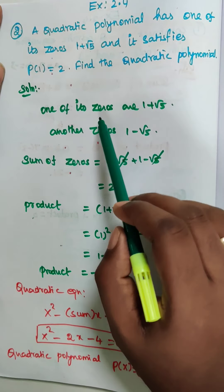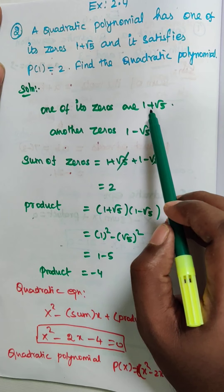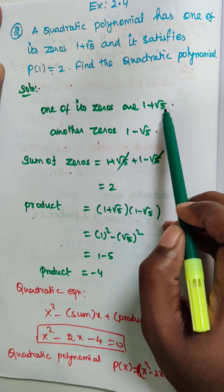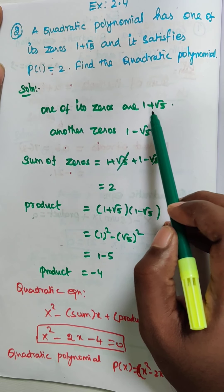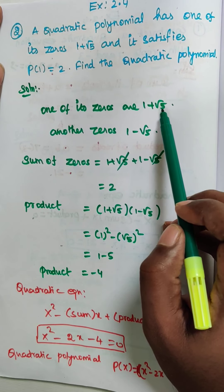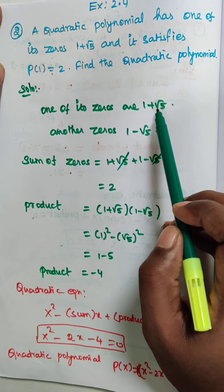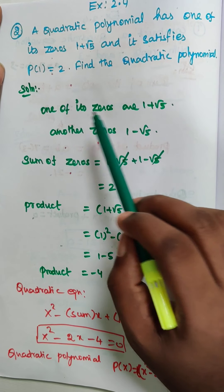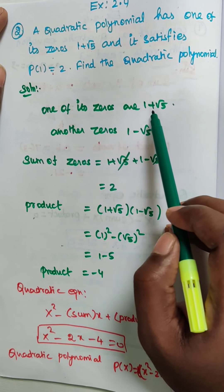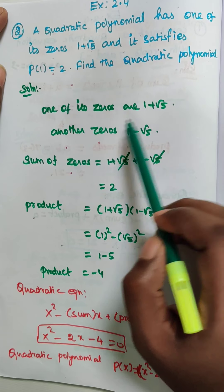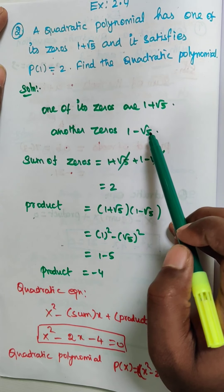So the given one of its zeros is 1 plus root 5. Since I already know one of the roots is 1 plus root 5, its conjugate is also a zero. So one zero is 1 plus root 5 and the other zero is 1 minus root 5.